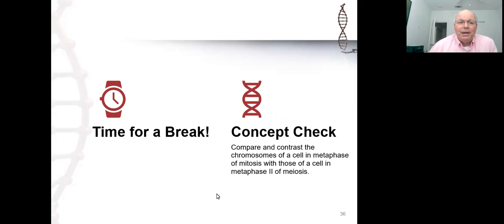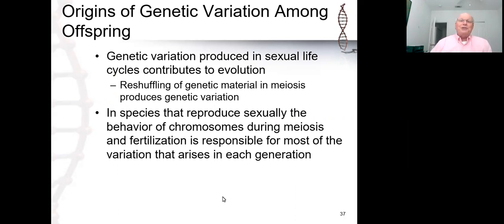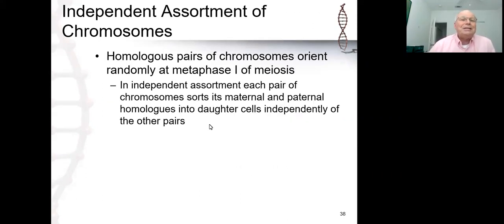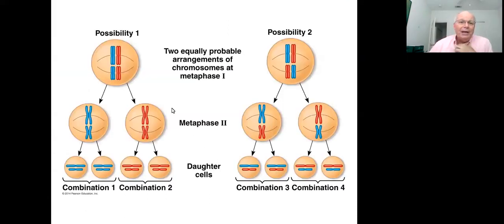So let's talk about sources of genetic variation, because that's the whole point of sexual reproduction. It turns out there are two specific sources. The first source is the way the homologous pairs of chromosomes line up on the metaphase plate during metaphase one. Each pair does its own thing — they line up randomly, with, for example, the blue chromosome on one side and the red on the other, or flipped around.